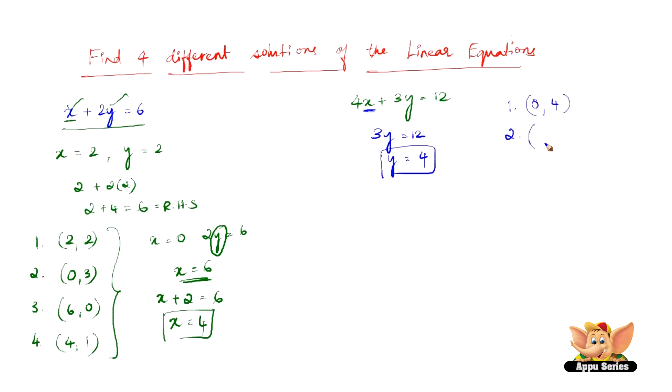Let us see the second one. So now that we have substituted x as 0, let us now substitute y as 0. So we have 4x plus 0 equals 12, which is nothing but x is 3. So here we have another one. So we have 3 comma 0.